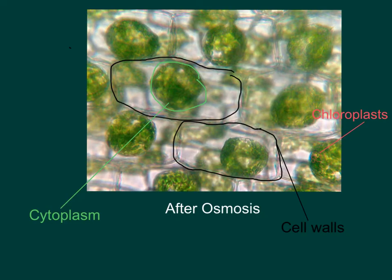Hello. In this slide, I will be explaining plasmolysis. However, before that, I will show you where the different organelles are. Here, we can see the cell walls of the cells of the Elodia plant, and here we can see the cytoplasm. The chloroplasts are here.